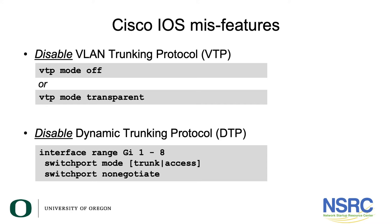The switch will try to automatically configure its port using Dynamic Trunking Protocol. We strongly recommend that you disable this and explicitly choose for each port whether you want it in access mode or trunk mode. You can also tell it to not negotiate at all.